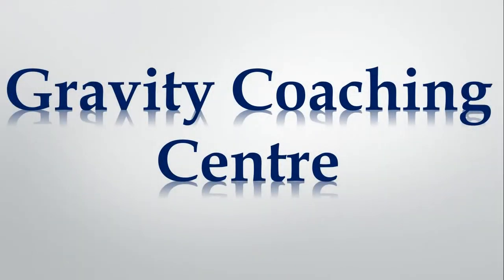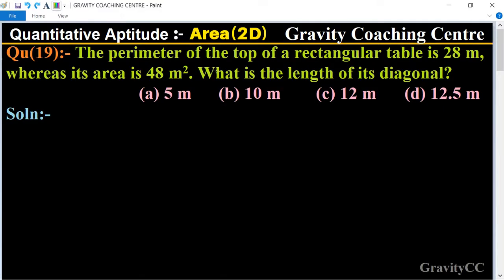Welcome to our channel Gravity Coaching Center. Quantitative aptitude chapter area, question number 19. The perimeter of the top of a rectangular table is 28 meters and